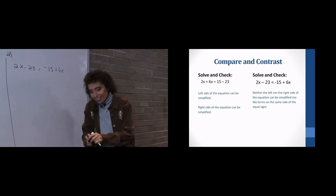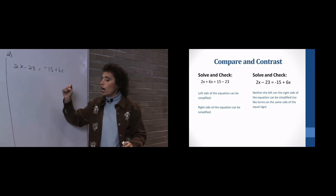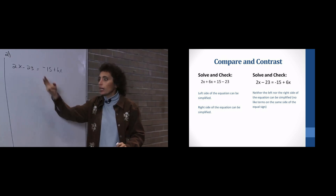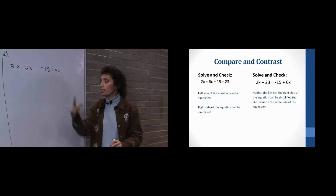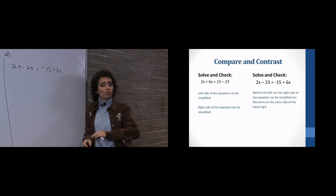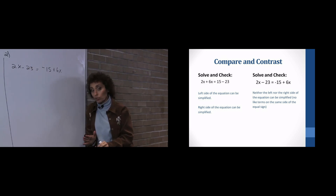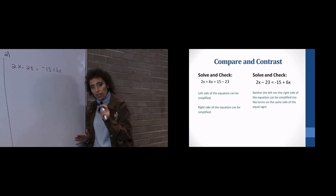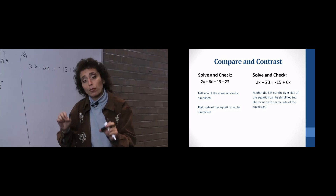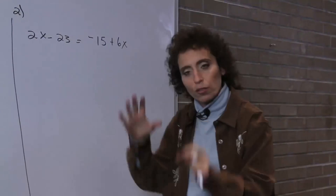Feel free to go home and check that. Now look at this second problem. I look at the left side — cannot combine, not like terms. Look at the right side — cannot combine. There are variables and numbers on both sides. This is the first time we've seen this. It doesn't really matter where you start, but it really will be a lot easier to start with a variable first.